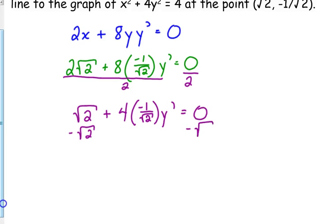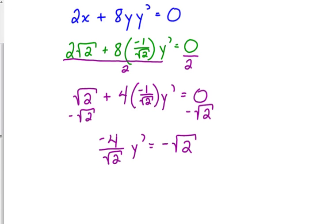Subtract the square root of 2 from both sides. All I did was multiply the 4 by the negative 1 over the square root of 2, so that's negative 4 over the square root of 2. And since that's a fraction, I'm not going to look at it as a division. Remember, we're trying to get in the habit of looking at that as multiplying by the reciprocal. Multiply both sides by the negative square root of 2 over 4, so it cancels.